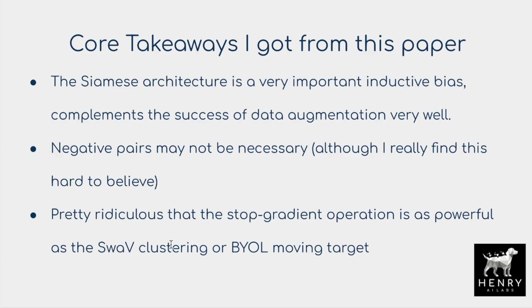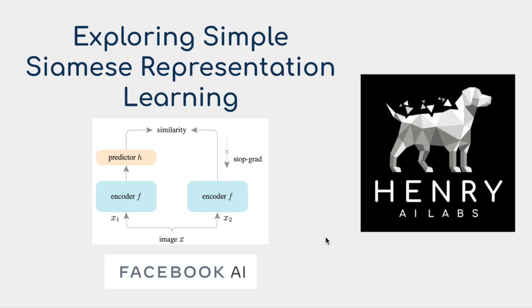It's remarkable that the simple stop gradient operation achieves similar results to SWAV clustering — which has an elegant, sophisticated approach of clustering and predicting cluster assignments — or to using a massively large negative batch in SimCLR, or the momentum encoder in MoCo. This paper really shows the importance of the Siamese network prior alongside data augmentation in the contrastive self-supervised learning framework. It's a very interesting paper that simplifies things if you're looking to implement contrastive self-supervised learning for your own experiments.